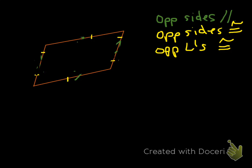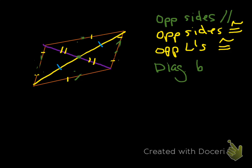Here's one thing you might not have known: the diagonals of a parallelogram bisect each other. So this is one diagonal and this is another diagonal. This point is the midpoint of both of those lines, which means this segment is congruent to that segment, and this segment is congruent to that segment. So diagonals bisect each other.